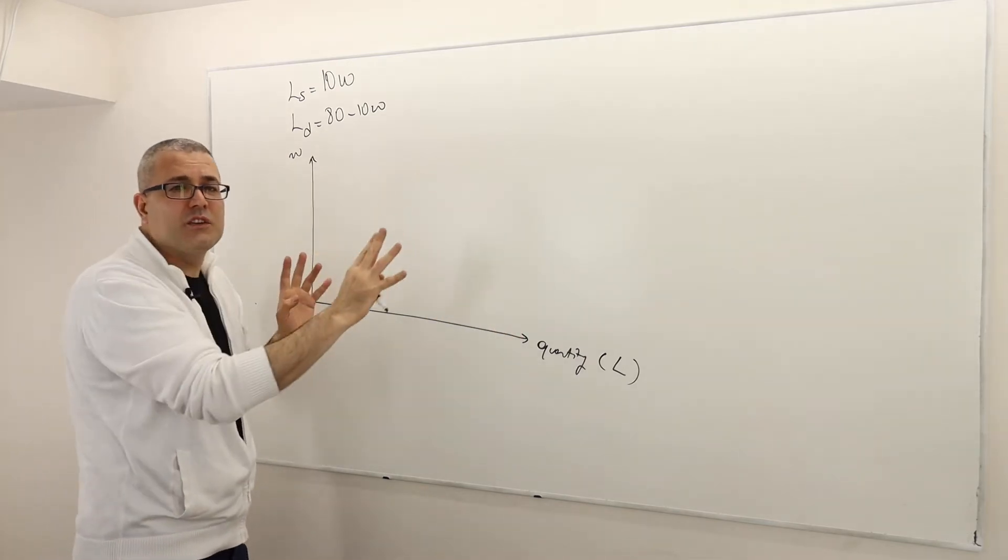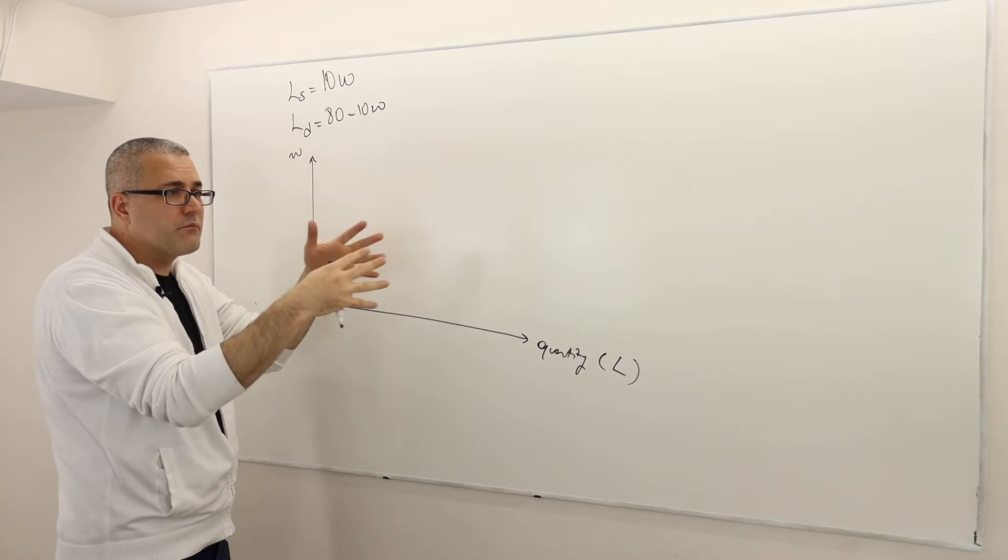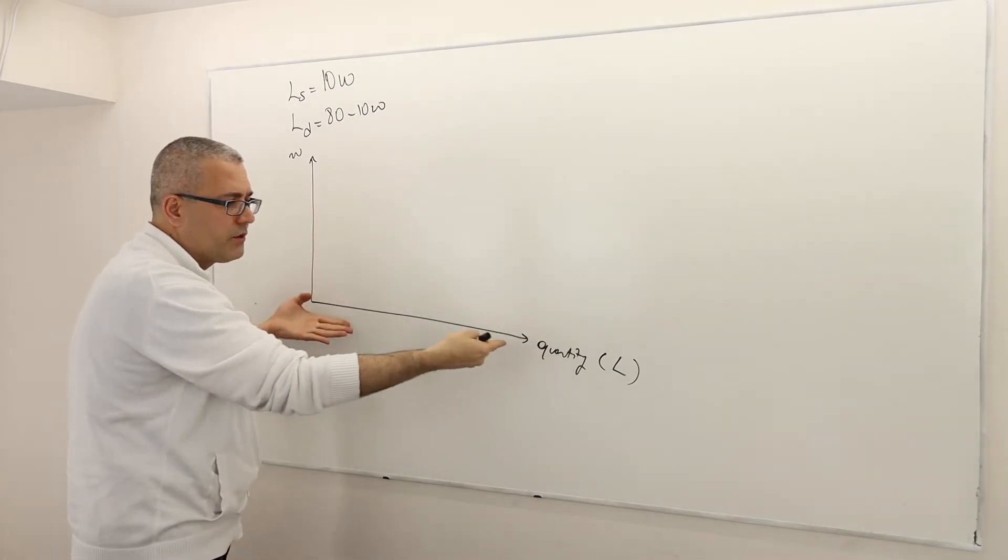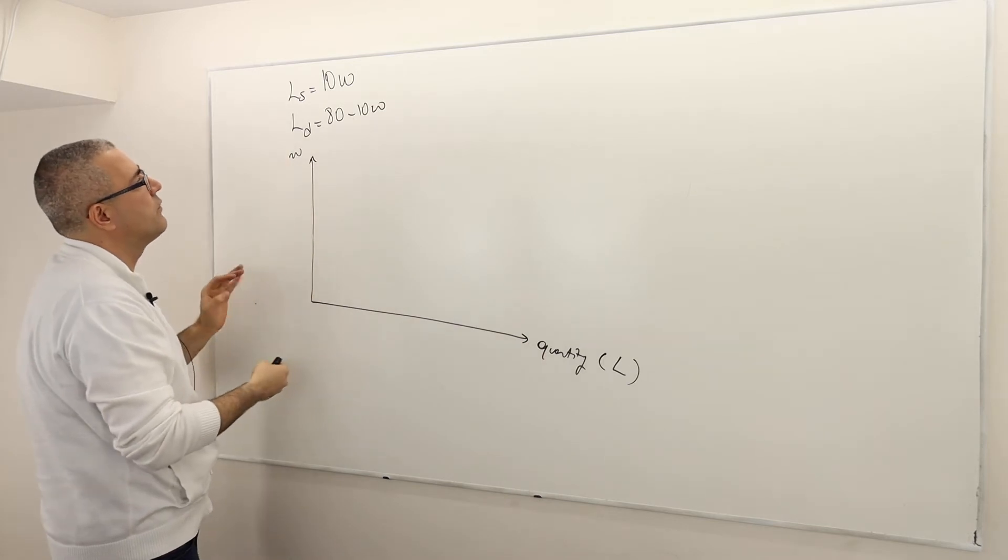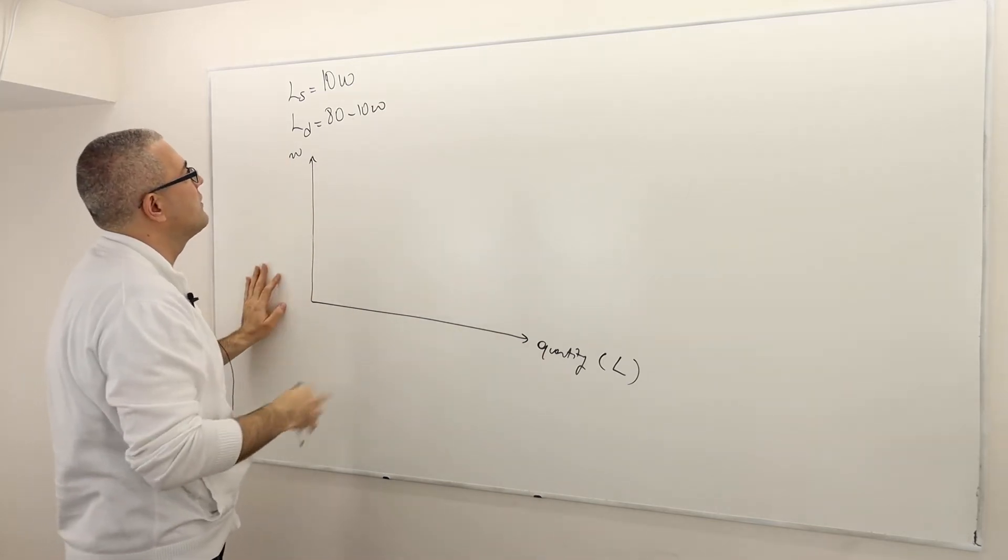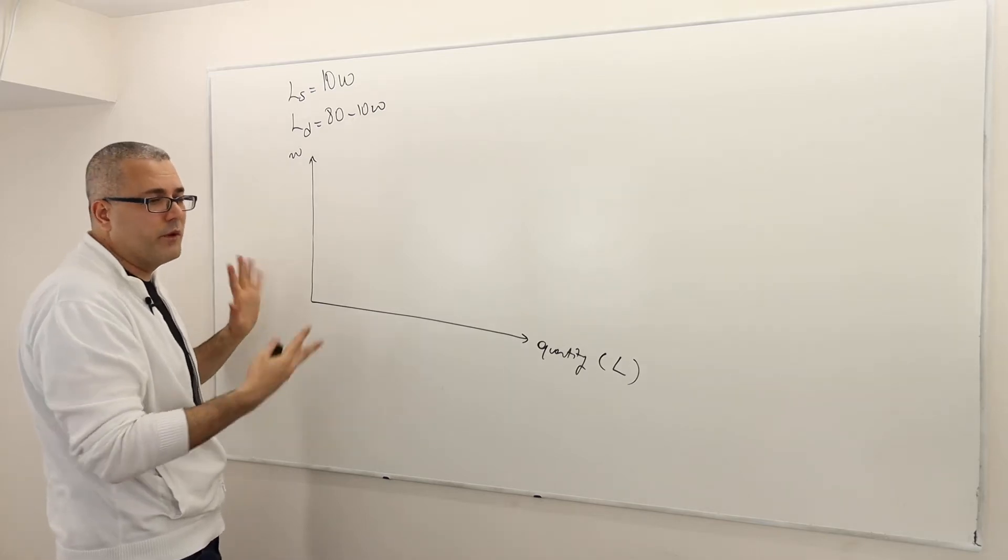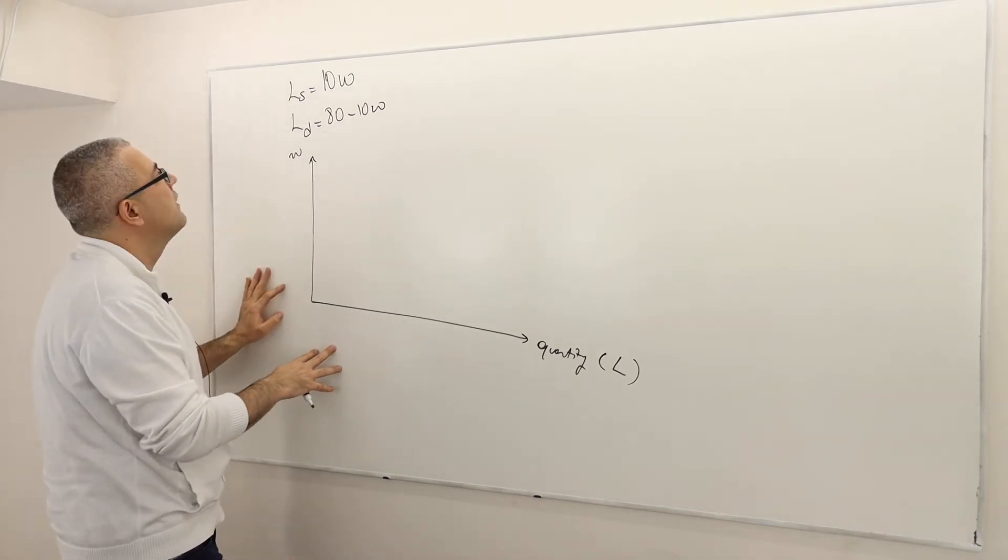So all our calculations or theories were built upon the assumption that quantity is on the horizontal axis and price is on the vertical axis. I don't know, sometimes I make some stupid remarks. I think they're obvious. But, well, just in case.